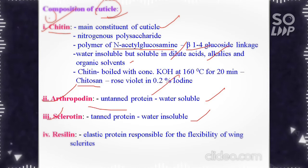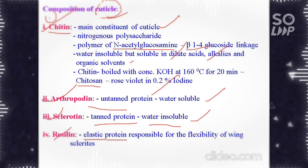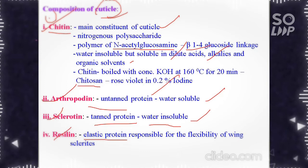Arthropodin is an untanned protein that is water insoluble and found in the endocuticle. Sclerotin is a tanned protein that is water insoluble and present in the exocuticle. Resilin is an elastic protein responsible for the flexibility of wing clearance and is present in the area of wing clearance.